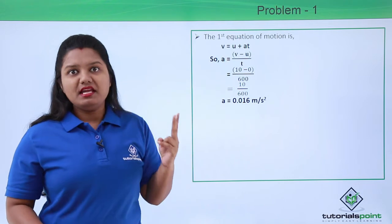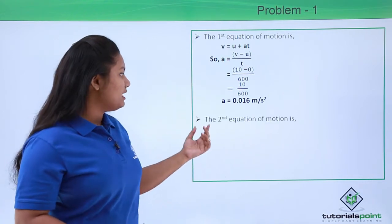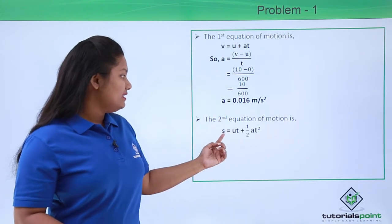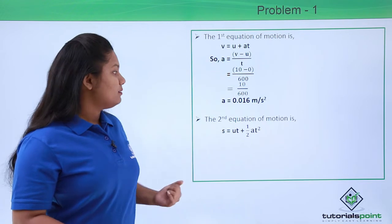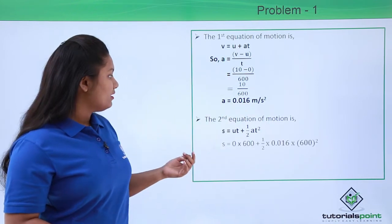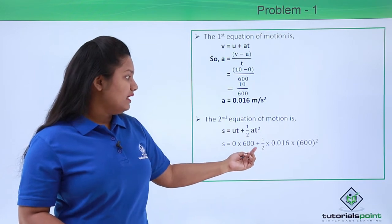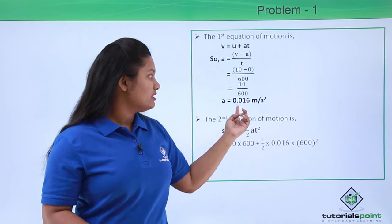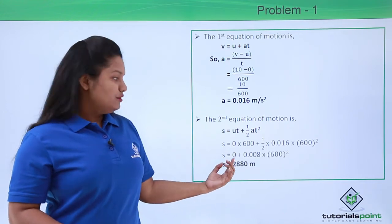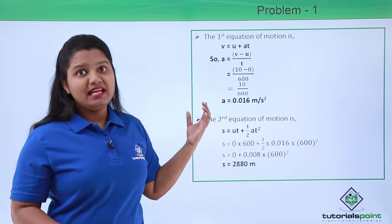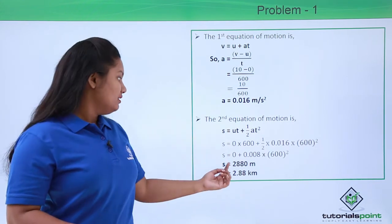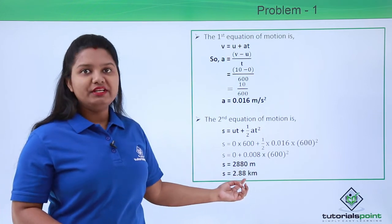Now we will use the second equation of motion to find the displacement of the train at the end of 10 minutes. The second equation of motion is S equals UT plus half AT squared. Substituting the values — U is 0, T is 600, and A is 0.016 — we get S equals 0 multiplied by 600 plus half multiplied by 0.016 multiplied by 600 squared. On evaluating this we get 2880 meters. So the displacement covered by the train at the end of 10 minutes is 2880 meters, which equals 2.88 kilometers.